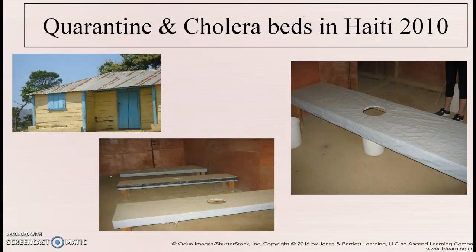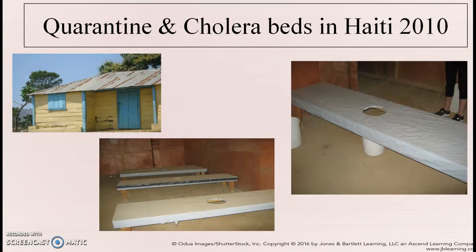These pictures show a quarantine building and cholera beds — cholera is waterborne and can spread via oral-fecal transmission. It produces copious amounts of diarrhea so severe that people cannot get up to use the bathroom. The beds have holes cut in them with a bucket underneath so patients can remain in bed. They become weakened from loss of fluids and electrolytes through diarrhea, so staying in bed helps, but hydration becomes critically important.